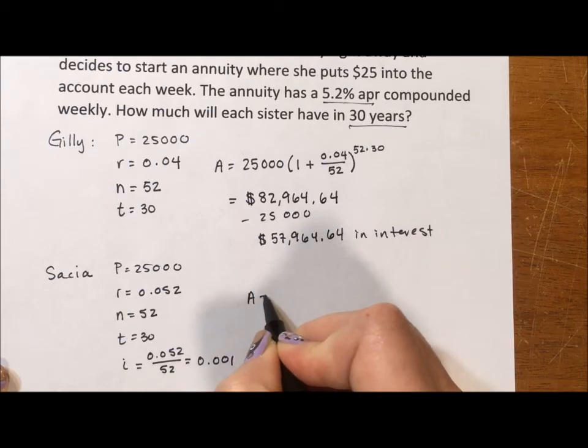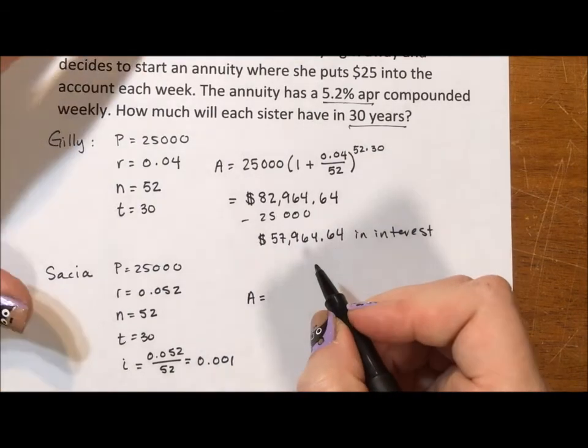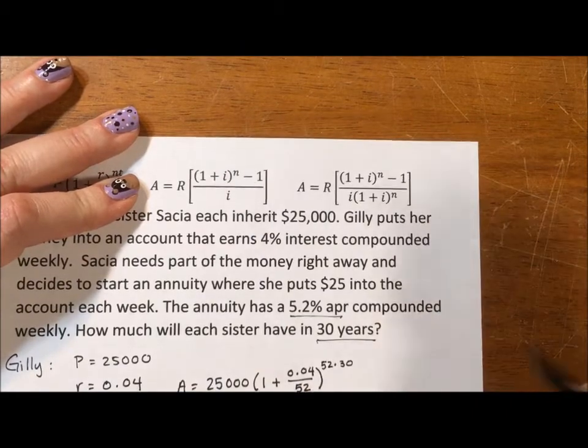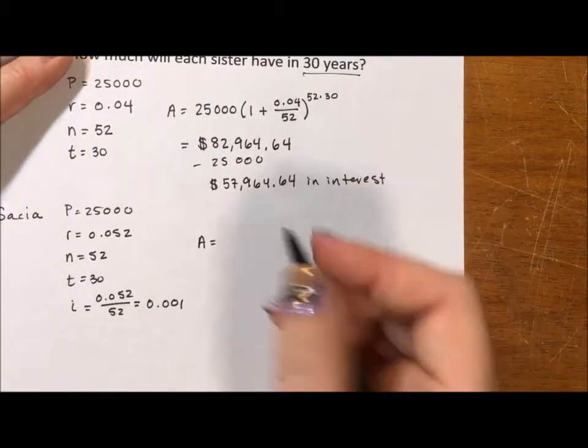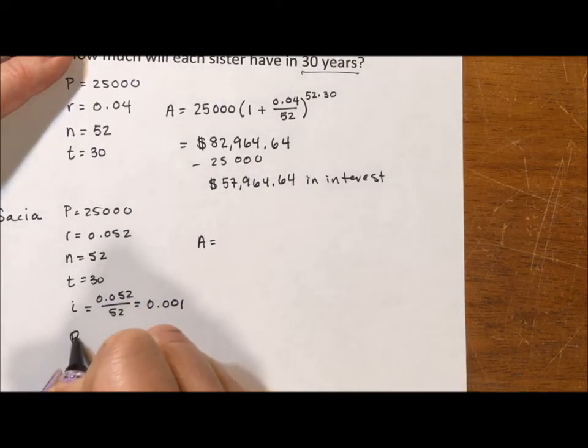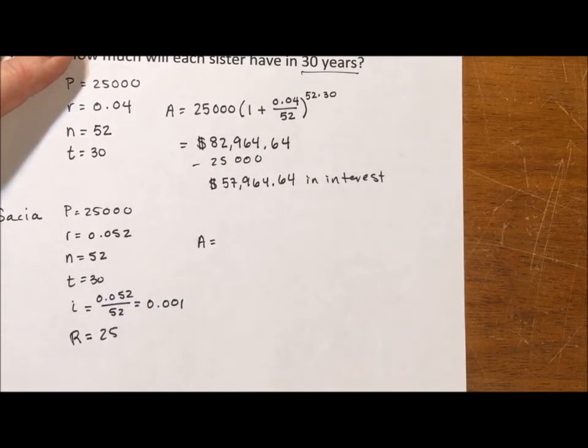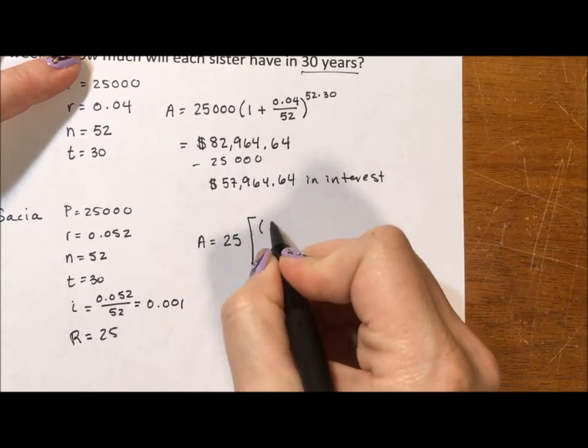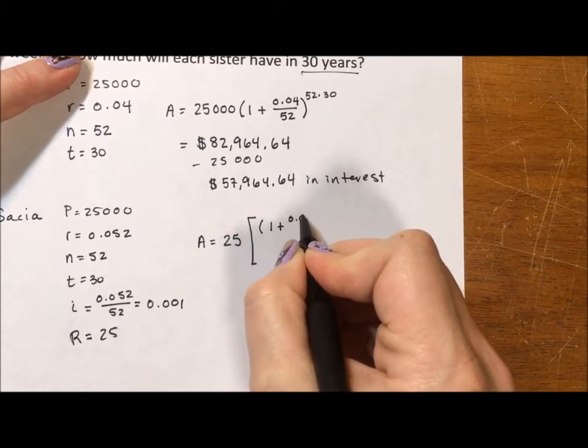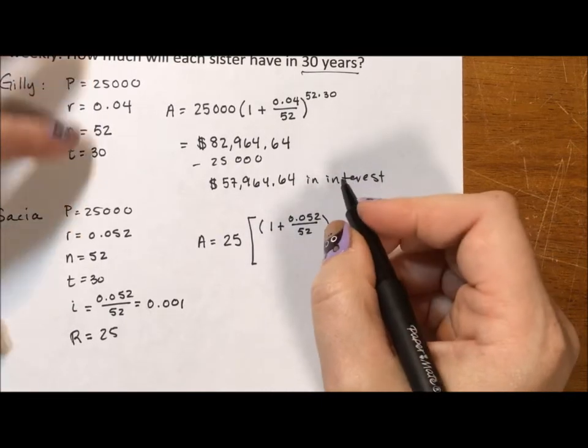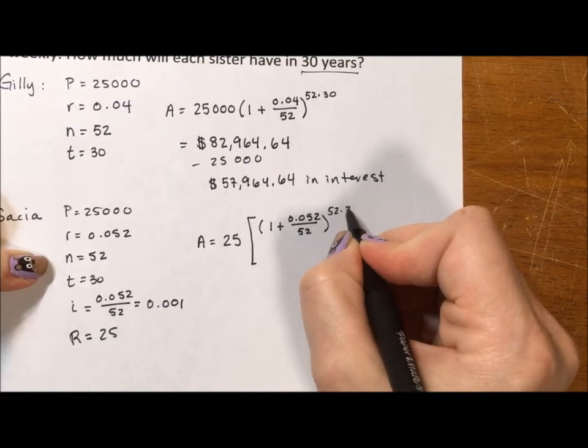So A equals, and I'm going to show you both ways of writing it. So if we look at this, this I is up top and it's down below. So one way of writing this, R, I didn't put her R. She's putting $25 away. Okay, it's 25 times, I can either do 1 plus 0.052 divided by 52 to the 52 times 30.